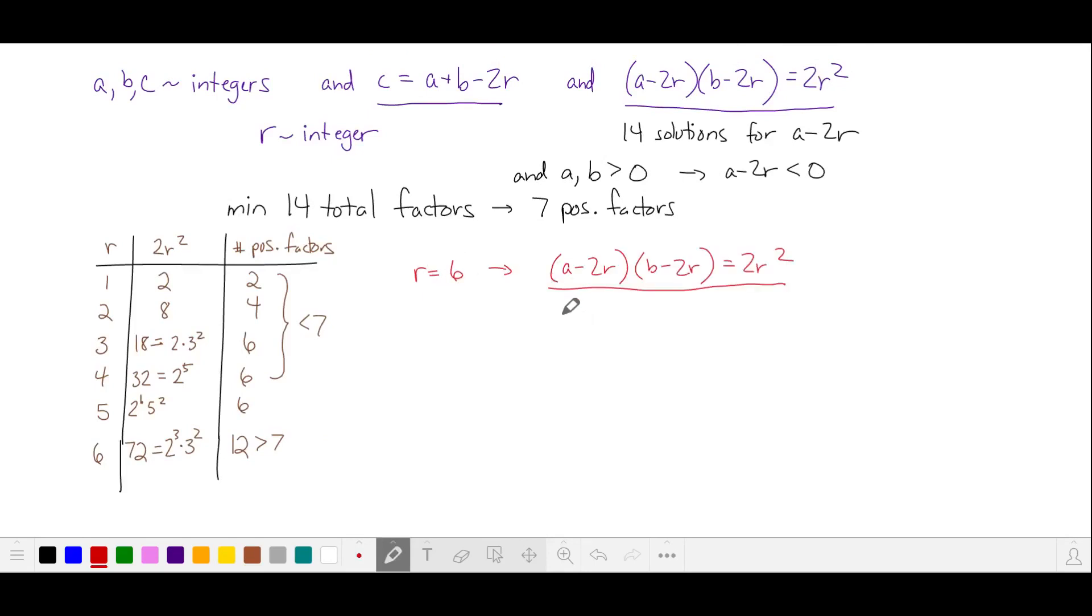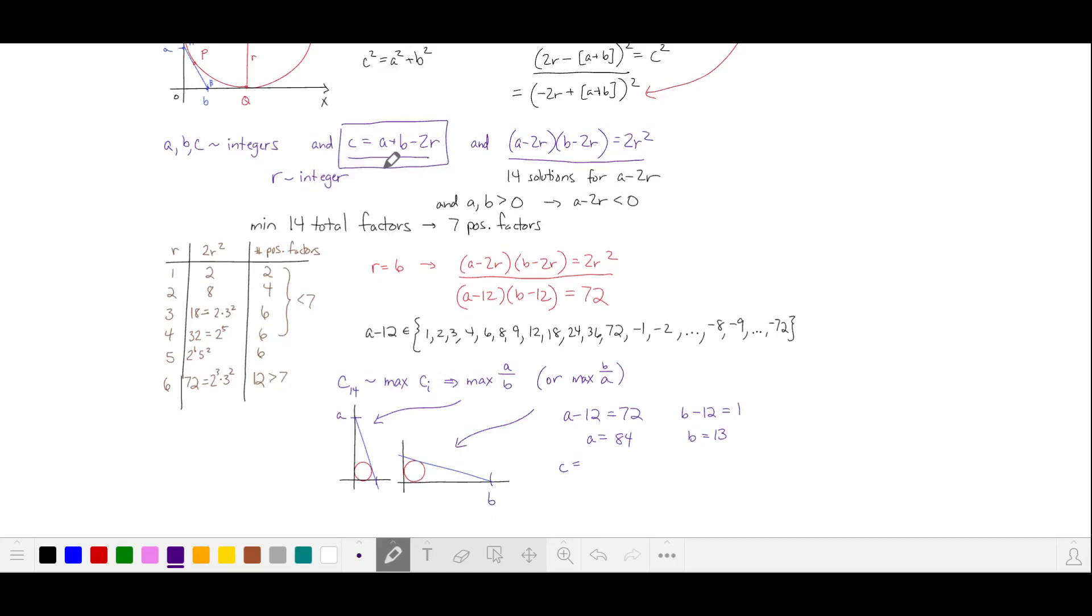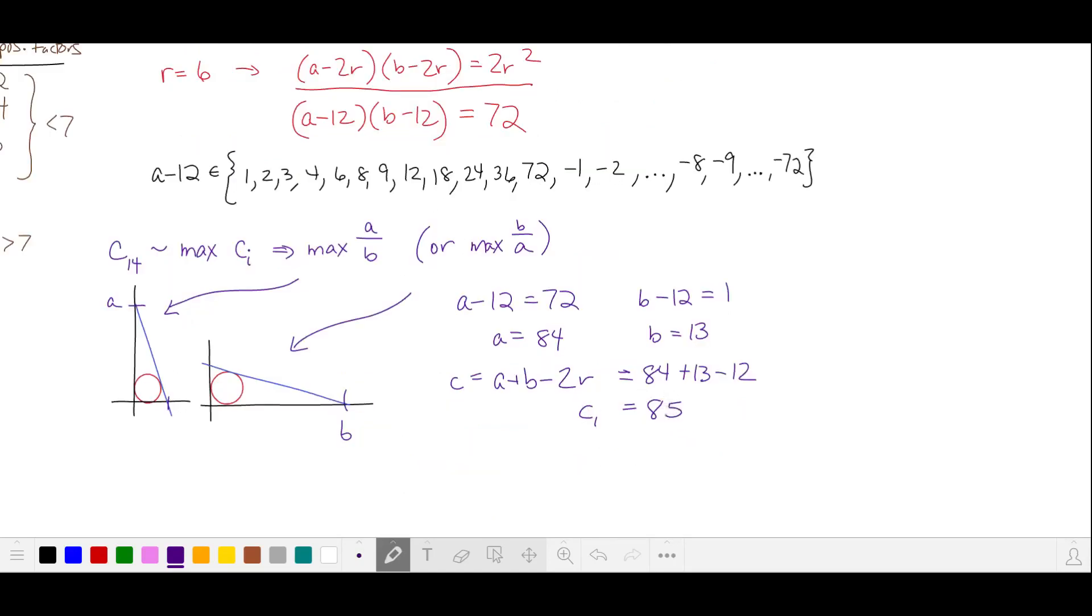So we'll try R equals 6. And substituting into our equation, one of our factors can be any of the 12 factors of 72. It could also potentially be one of the negative factors, with the restriction that A has to be positive. Let's find C14, which is the maximum of all the C's. We're going to achieve our maximum segment length when we maximize A over B. So we choose the largest value of A minus 12, and the smallest value of B minus 12. That gives us A is 84, and B is 13. And C is A plus B minus 2R, which is 85. And that's our value for C14.